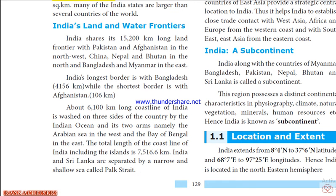India's land frontier is 15,200 km. The countries sharing borders with India are Pakistan, Afghanistan, China, Nepal, Bhutan, Bangladesh and Myanmar. India shares its longest border with Bangladesh. The total land border is 15,200 km.